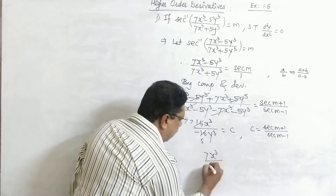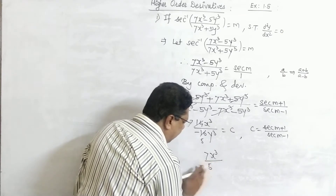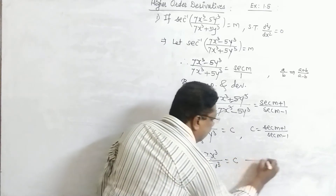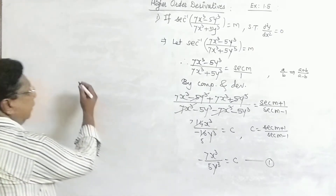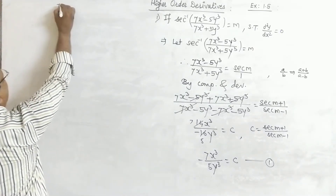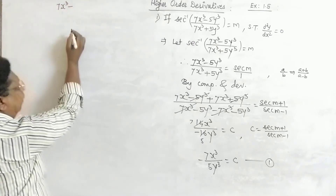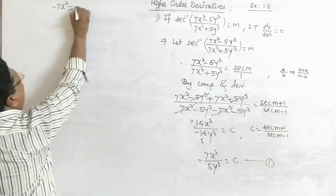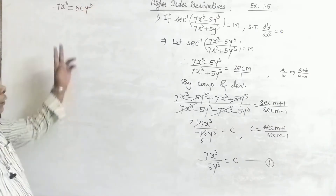After simplifying: 7x³ in the numerator and minus 5y³ in the denominator — dividing both sides by 2 gives 7x³ upon 5y³ equals c. Now take cross multiplication: 7x³ equals c · 5y³, that is 7x³ = 5c·y³.